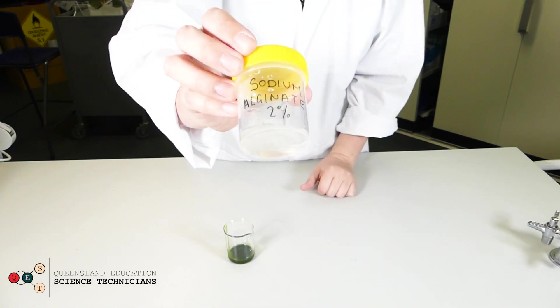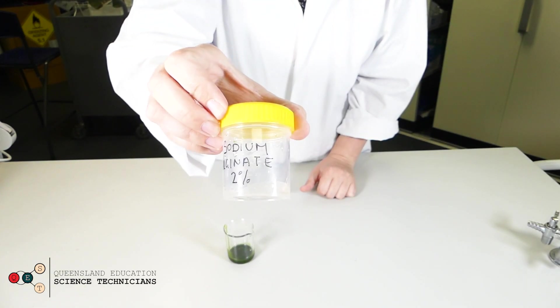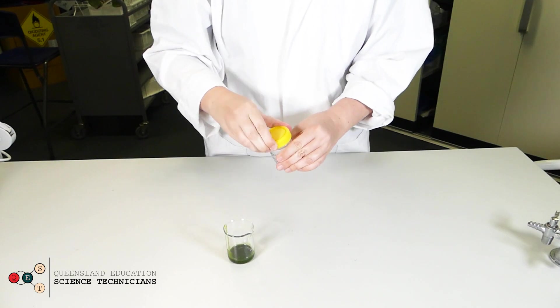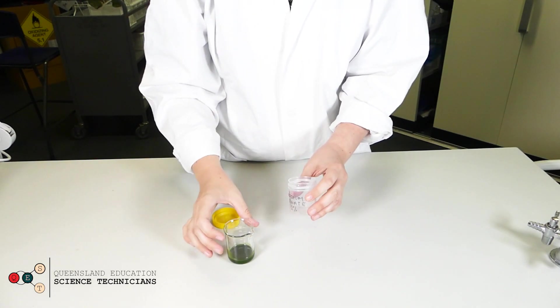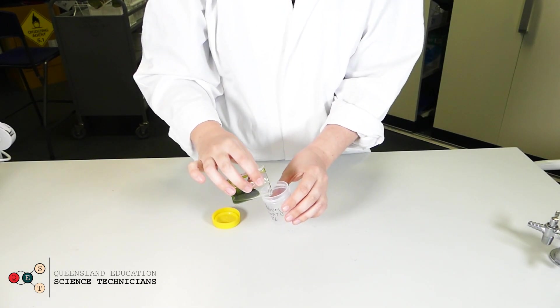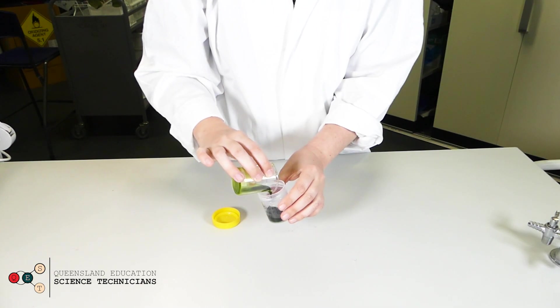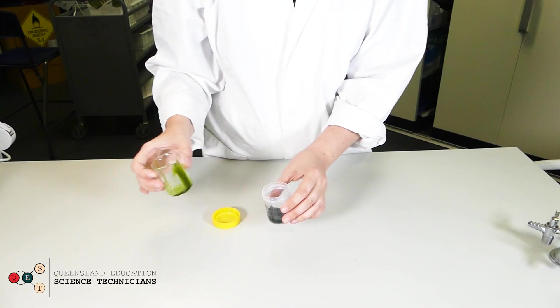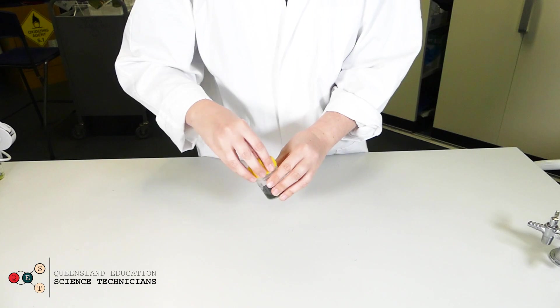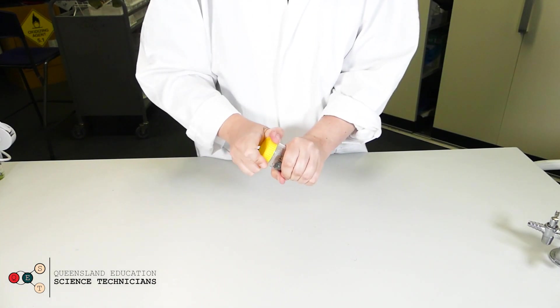So I've pre-made some sodium alginate, a 2% solution, and put it into this specimen jar. This is about 5 mils of sodium alginate and I'm going to add 10 mils of our algae that was in that layer at the bottom of the conical flask.